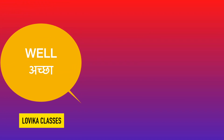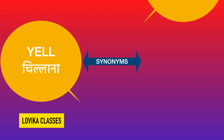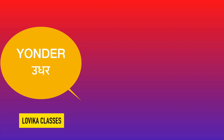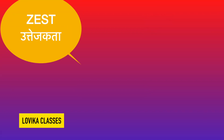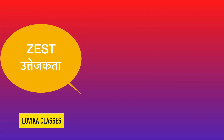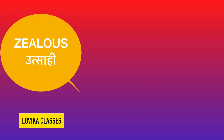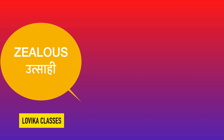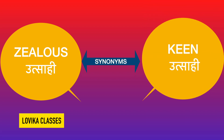Well means achcha — its synonym is good. Yell means chillana — its synonym is shout, also meaning chillana. Yonder means udhar, means dhear. Zest means utejakta, bequaisi — its synonyms include jealous and keen, meaning utsahi.